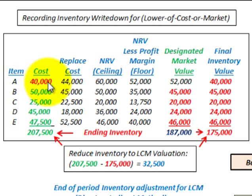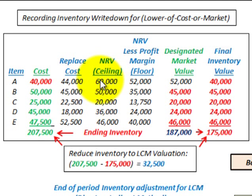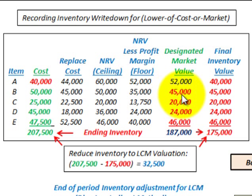Looking at Item A, for example, we have a ceiling amount of $60,000 — that would be the high amount — and then we have a replacement cost of $44,000, the low amount. So the middle amount would be $52,000, and that's what we'd have as our designated market value. We go through each of these items and find the middle amount for our market values between cost, ceiling, and floor.